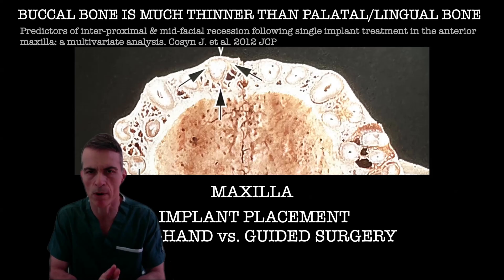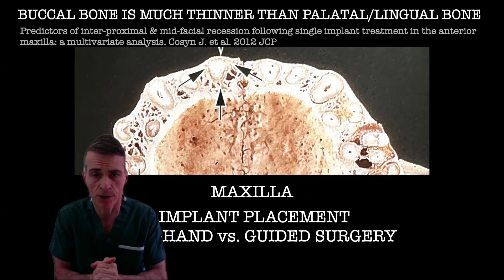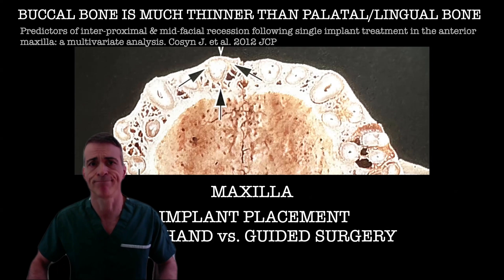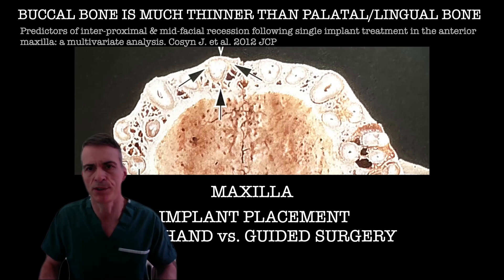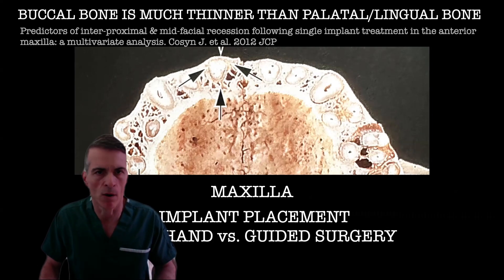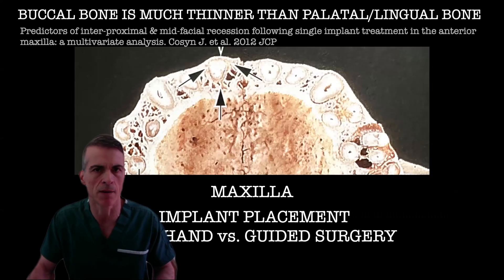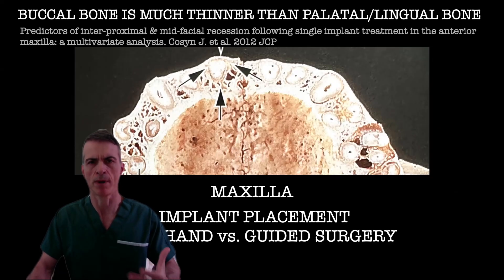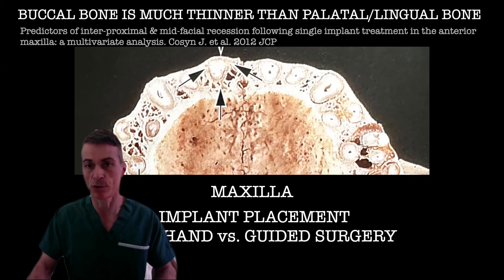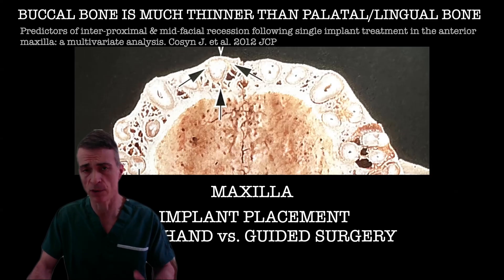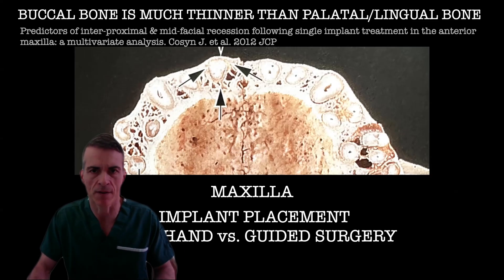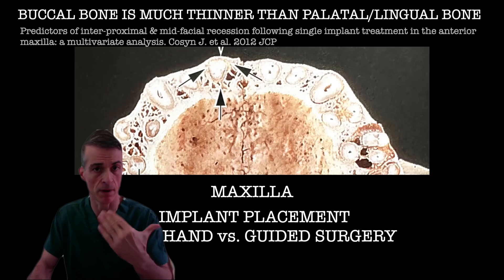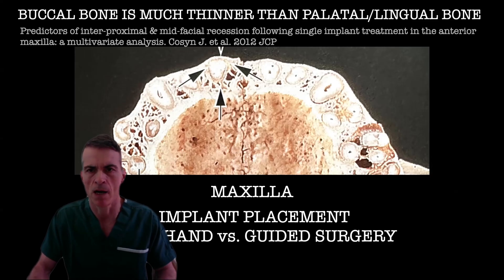Always remember that 3D positioning is key and critical. Always picture in your mind that the buccal bone thickness is significantly thinner than the palatal bone. That's why we want to place our implants towards the palatal for two reasons: for aesthetic reasons, to avoid aesthetic failures and recessions in the future if the implant is placed too buccal, and to achieve better primary stability.